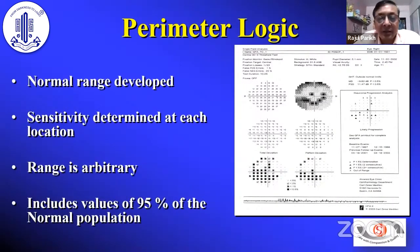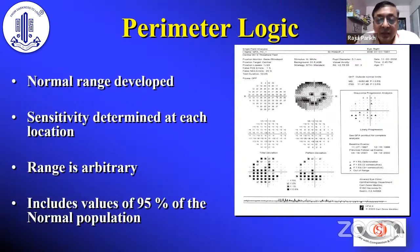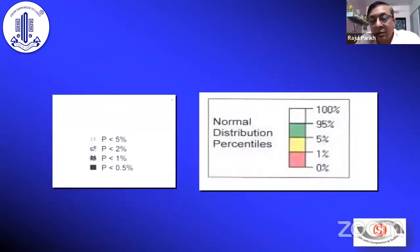The logic is similar to perimetry. When perimetry started, we developed a normal range for each point, and sensitivity for each point is determined. The range is arbitrary and basically includes the normal population. The lower 5% of the normal population is what we call the abnormal 5% defect level. We then use 2% and less than 0.5%. So we use a normal range to decide abnormality. Every abnormal doesn't mean there's a disease — it is the probability of that patient having disease.